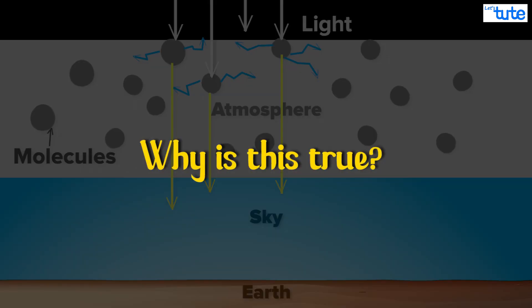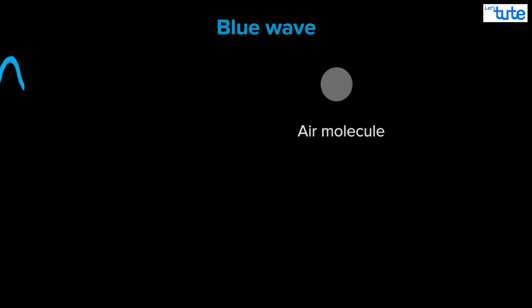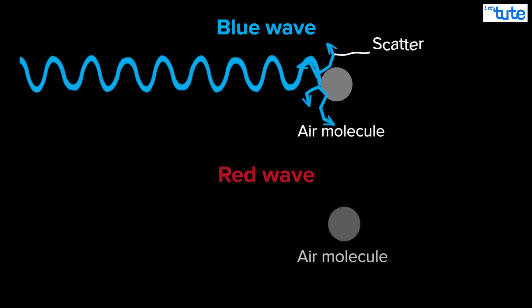Why is this true? Well, look at this exaggerated small wavelength of light. Because it moves up and down in such a small length, it will probably hit the atom in front of it.